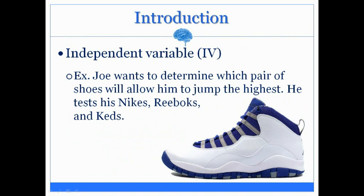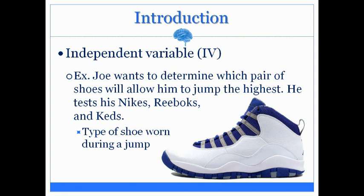Example number two. Joe wants to determine which pair of shoes will allow him to jump the highest. He tests a couple of different brands — his Nikes, his Reeboks, as well as his Keds. The independent variable is the factor being manipulated, and what Joe is manipulating is the type of shoe — the brand of shoe — that he wore on his feet when he jumped.